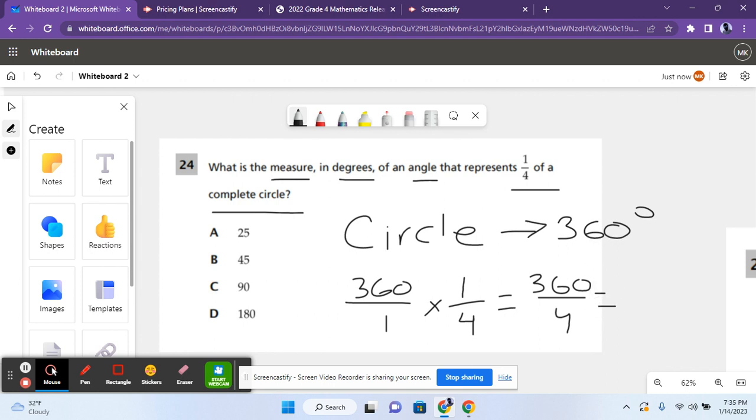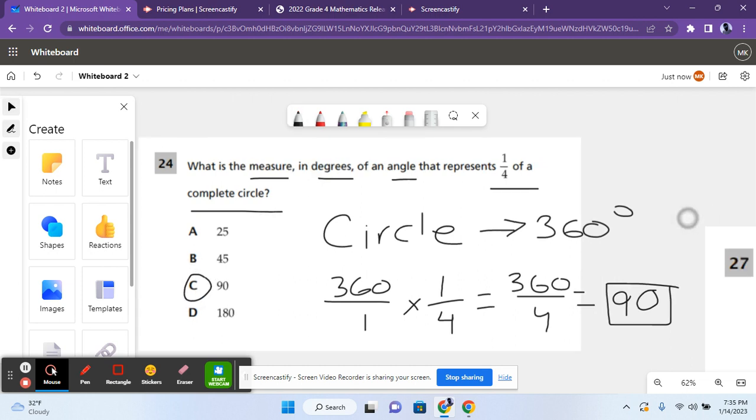After that you just do 360 divided by 4 which is 90. So the measure of a one-fourth circle is 90 degrees which is answer choice C. Let's move on to the next question.